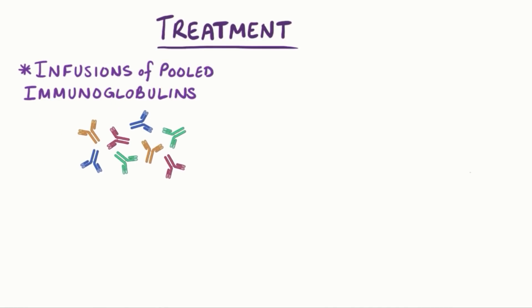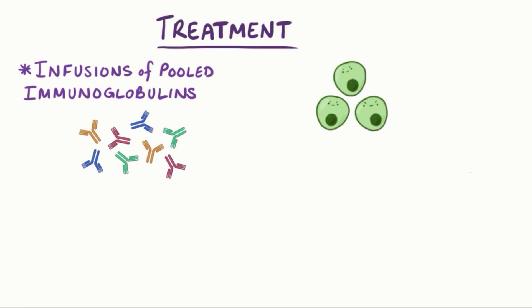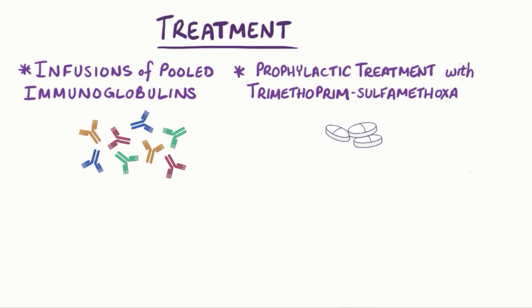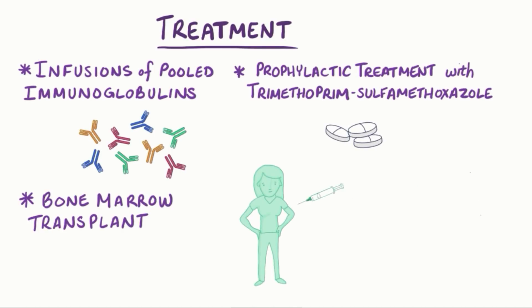Treatment includes infusions of immunoglobulin pooled from lots of donors, which helps provide passive immunity that can help the immune system fight off pathogens. Because of the risk of Pneumocystis jirovecii infection, individuals are often prophylactically treated with the antibiotic trimethoprim-sulfamethoxazole. In some instances, a bone marrow transplant can be done to establish a normal immune system.